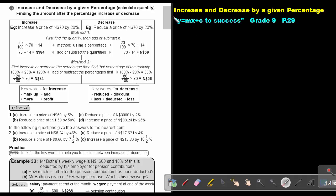Part 23: Increase and decrease by a given percentage. You will find this on page 29 in the Namibian Mathematics Grade 9 textbook Y equals MX plus C to success. Increase and decrease by a given percentage, calculate the quantity, finding the amount of the percentage increase or decrease.